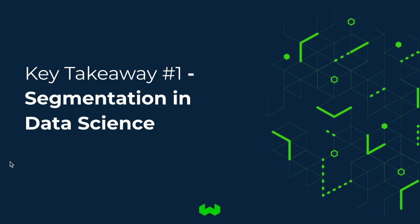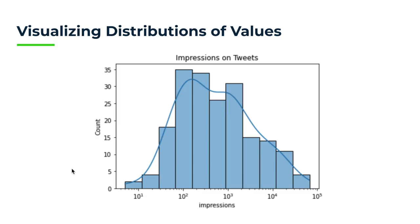The first key idea is understanding the task of segmentation in data science. We typically have a distribution of values of something we care about. For the Twitter analytics example, I'm interested in the number of impressions each tweet receives so I can gain insights into what topics to tweet about. Following the CSV export, I plot impressions in a histogram — most tweets have a mid-level of impressions, and fewer tweets reach very high impression counts.